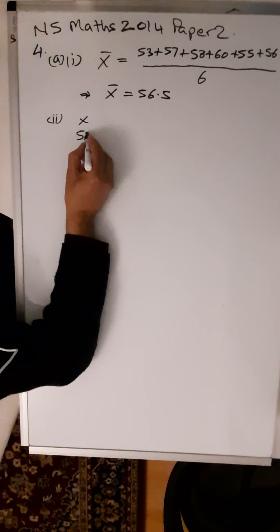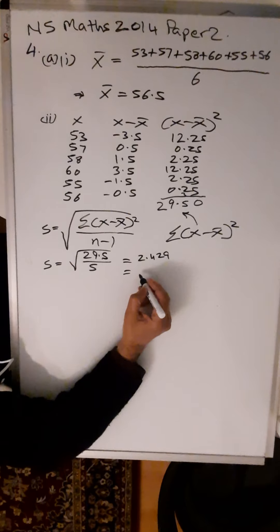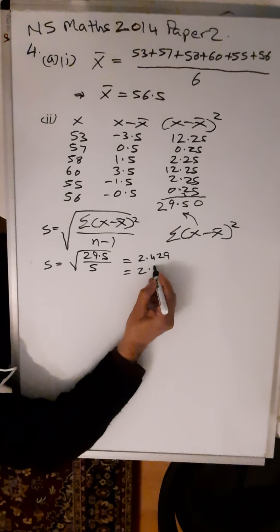Divided by n minus 1. n minus 1 is the number of results minus 1. Six minus 1—there are 6 results there, take 1 away, you get 5.